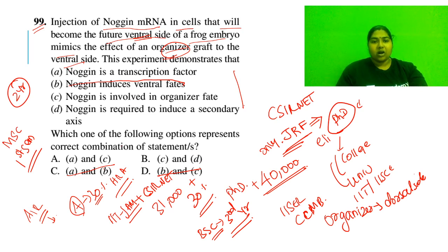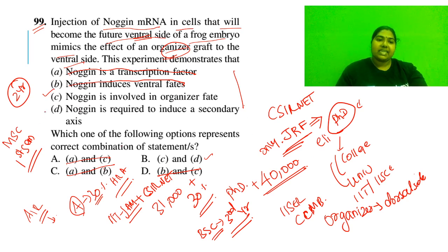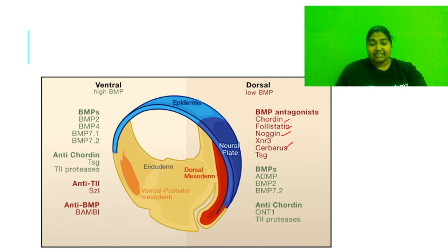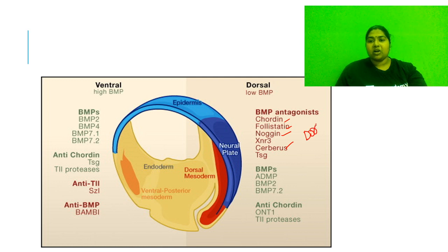Noggin is a protein and it is nowhere stated that it is a transcription factor, so option A is eliminated. The correct answer is C and D. Option C - noggin is involved in the organizer - is a true statement. Option D - if it is an organizer, it will definitely induce a secondary axis - that is obvious. So the correct answer is C and D.